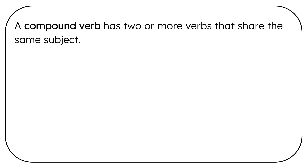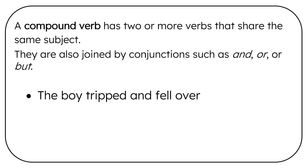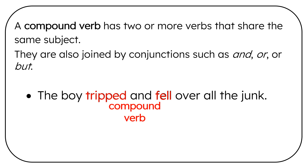A compound verb has two or more verbs that share the same subject. They are also joined by conjunctions such as and, or, or but. The boy tripped and fell over all the junk. If we find the verb first, we have tripped and fell — it's a compound verb joined with the conjunction and.